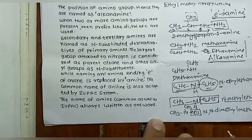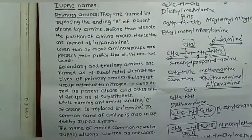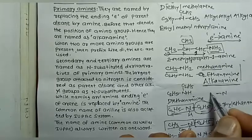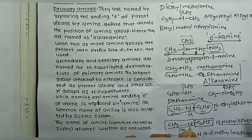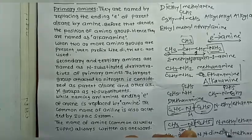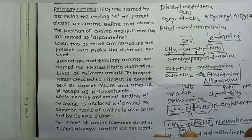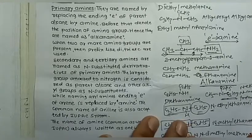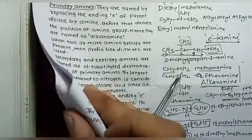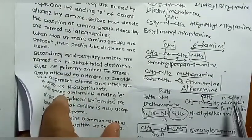If three different alkyl groups are present — methyl, ethyl, and n-propyl — the largest group, propyl, is the parent giving 'propan-1-amine'. The substituents are written in alphabetical order: N-ethyl comes before N-methyl. The full IUPAC name is 'N-ethyl-N-methylpropan-1-amine'.